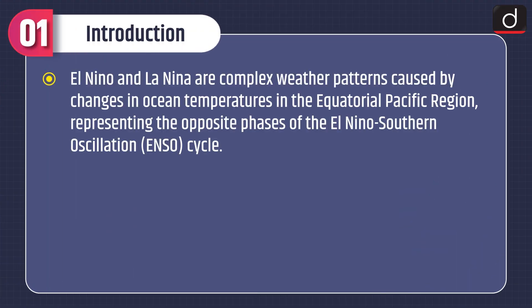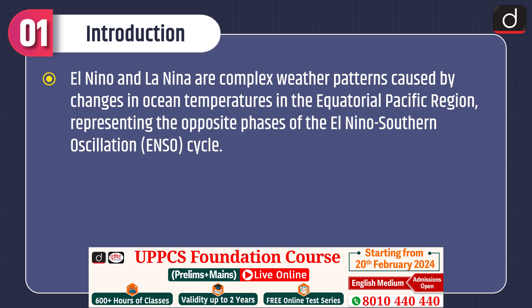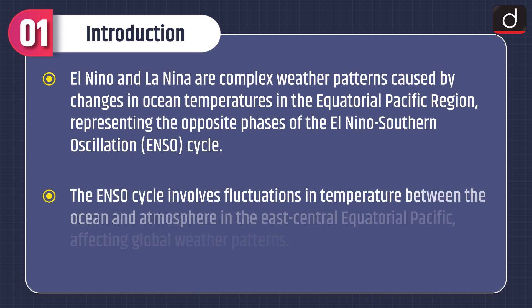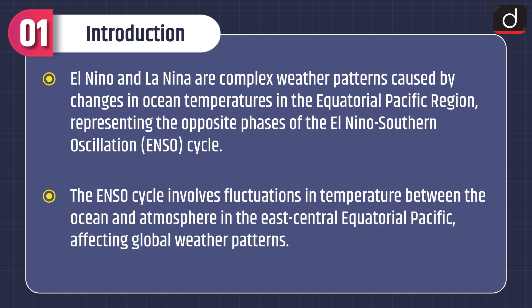Moving on to the introduction: El Niño and La Niña are complex weather patterns caused by changes in ocean temperatures in the equatorial Pacific region, representing the opposite phases of El Niño's Southern Oscillation, i.e. the ENSO cycle. The ENSO cycle involves fluctuations in temperature between the ocean and atmosphere in the east-central equatorial Pacific, affecting global weather patterns.